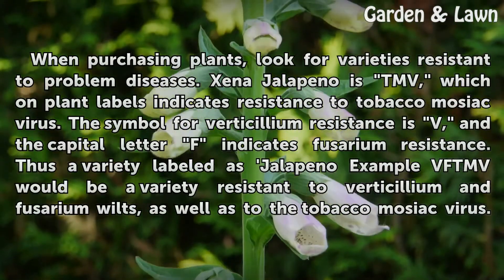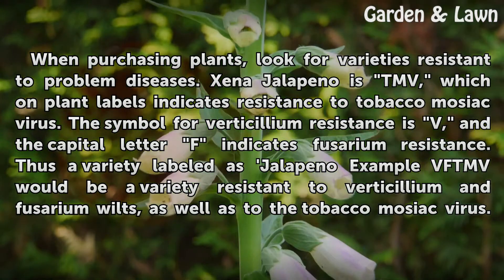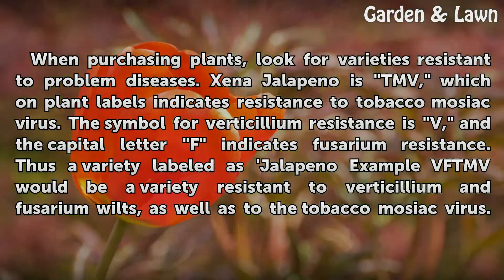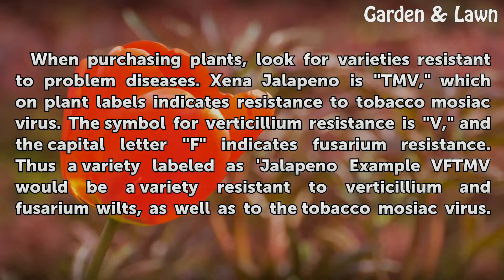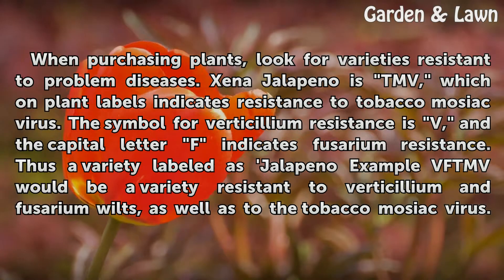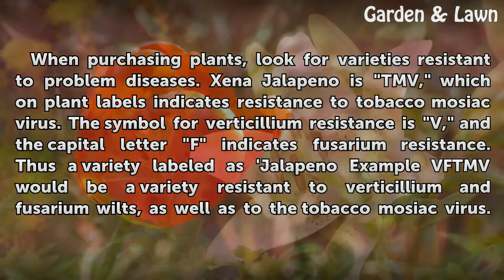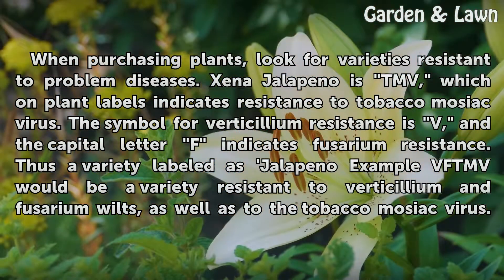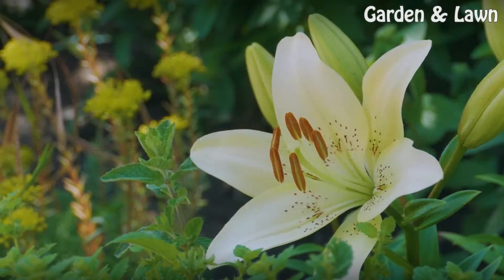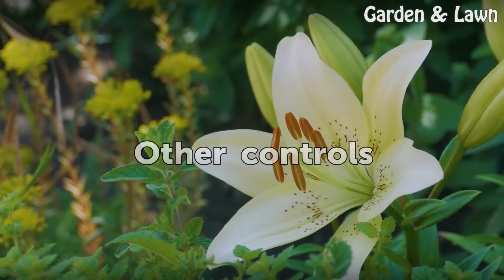When purchasing plants, look for varieties resistant to problem diseases. On plant labels, 'TMV' indicates resistance to tobacco mosaic virus, 'V' indicates verticillium resistance, and the capital letter 'F' indicates fusarium resistance. Thus a variety labeled as, for example, 'VF TMV' would be resistant to verticillium and fusarium wilts as well as tobacco mosaic virus.